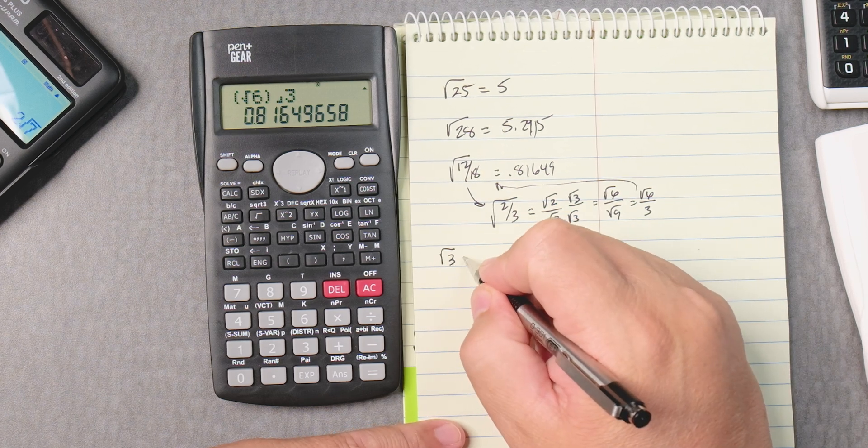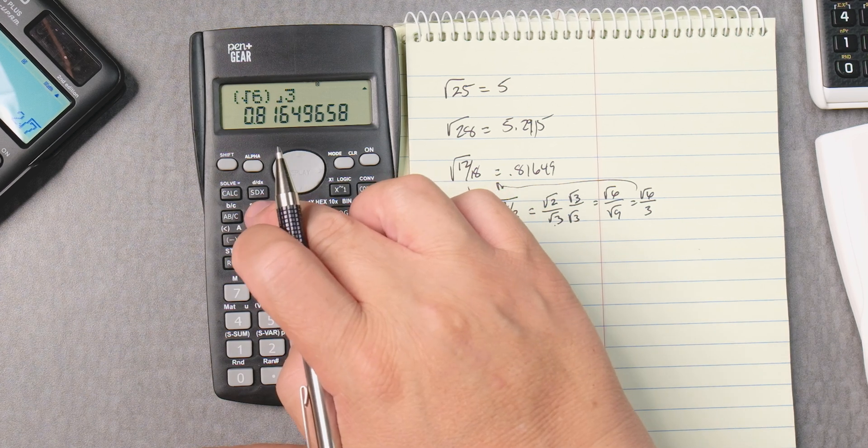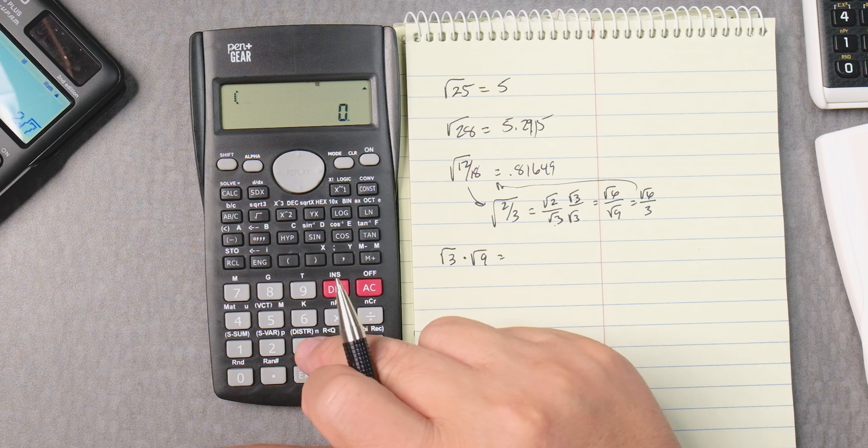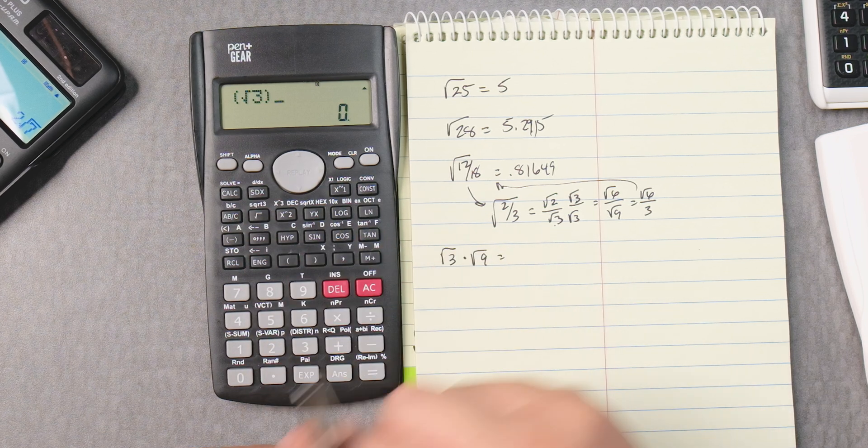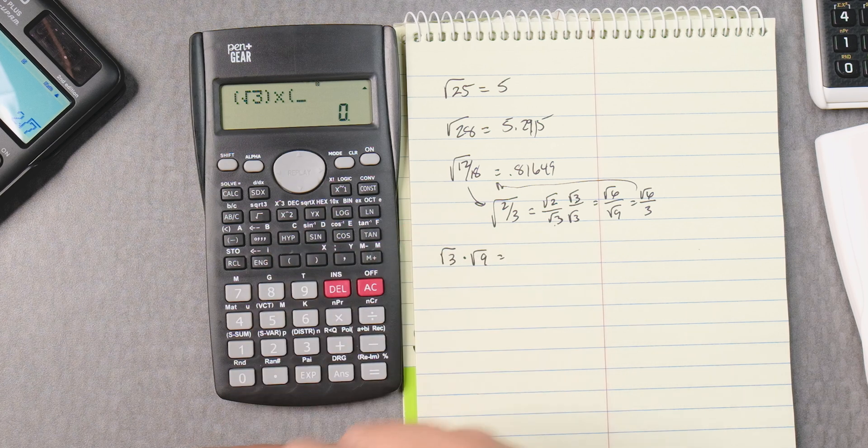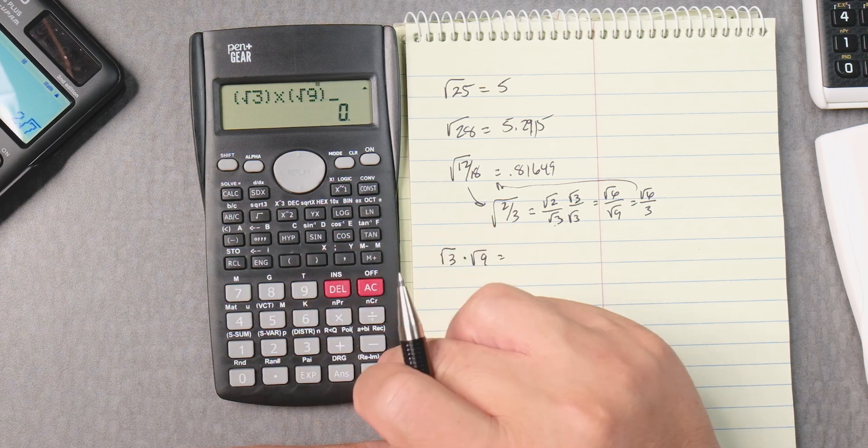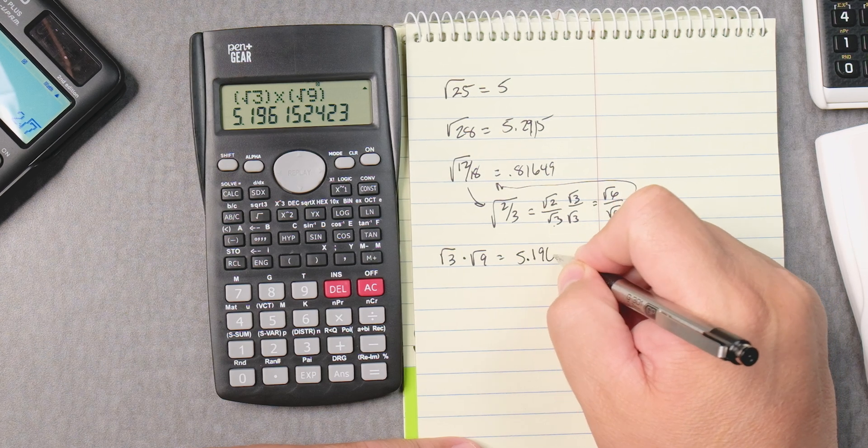So square root of 3 times square root of 9, let's say. Okay, so it looks like we're going to have to put parentheses, square root of 3 close parentheses times parentheses, square root of 9 close parentheses. Probably best to do that and that gives you 5.196.